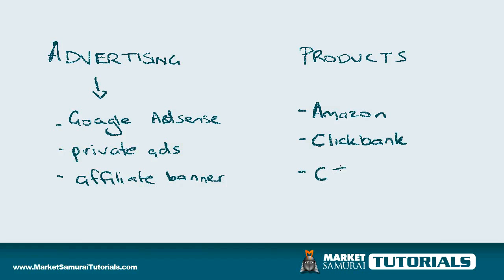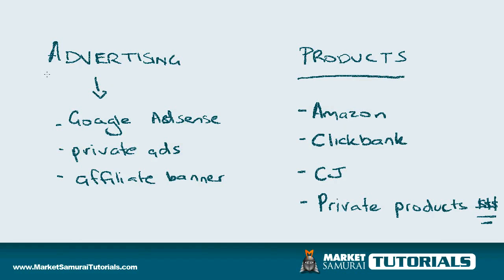There's another one called Commission Junction, which stands for CJ. You can also sell your own private products which you can create. Private products are a bit of work but actually a lot more lucrative and very profitable as well — something you can potentially do yourself down the track. But to test out and start off with first, you can do products and advertising. These are the quickest ways to find products, and I don't want to overwhelm you with too much, so let's just jump into Market Samurai.